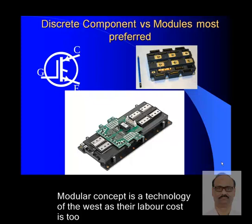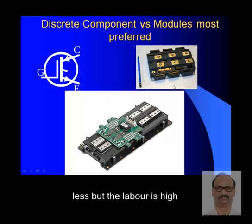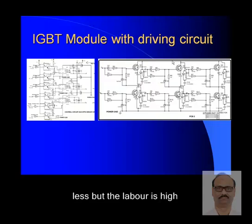Discrete components versus modules: modules are most preferred. A discrete IGBT is singular; you can use multiple discrete IGBTs to build any inverter. Alternatively, modules package six IGBTs into one unit, making it much easier to replace devices compared to wiring individual MOSFETs. The bottom of the module also acts as a heat sink. The modular concept is a technology of the West, where labor costs are high.